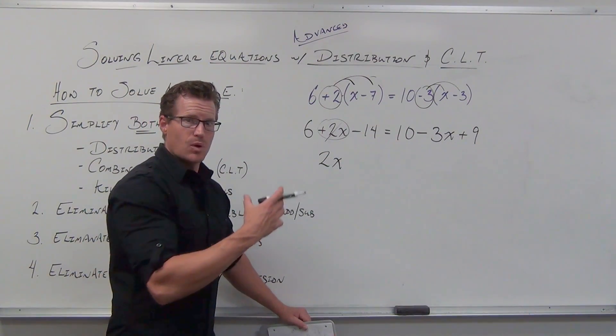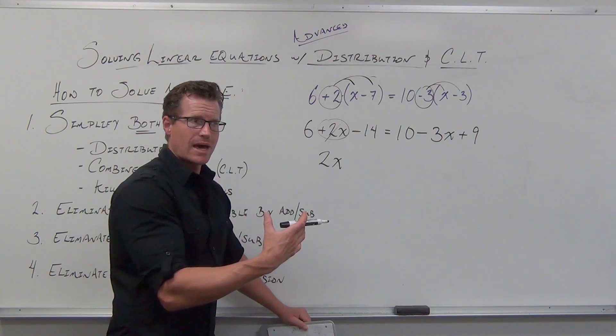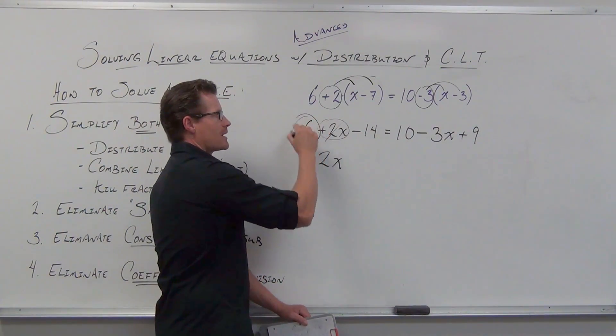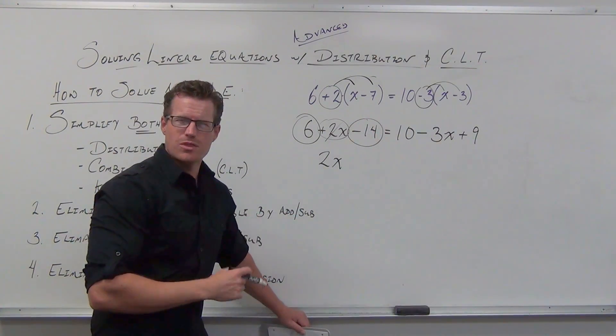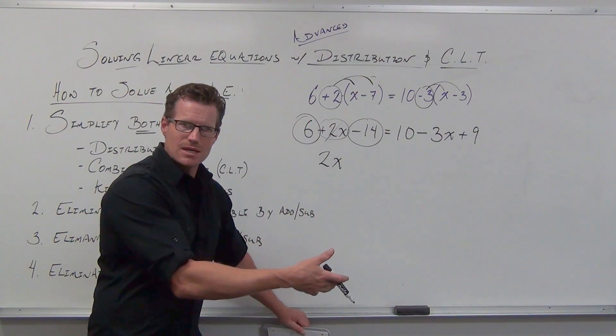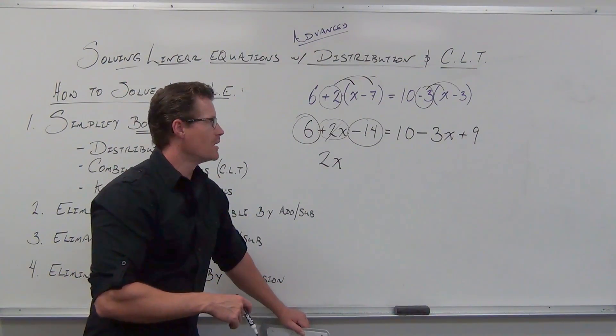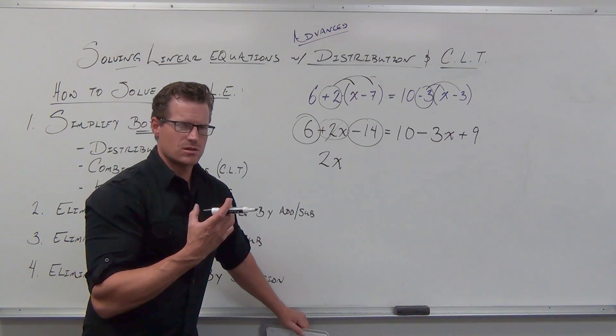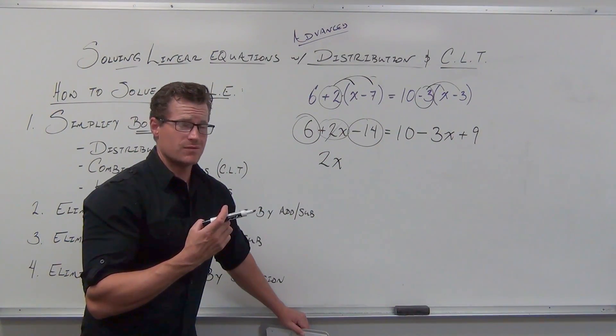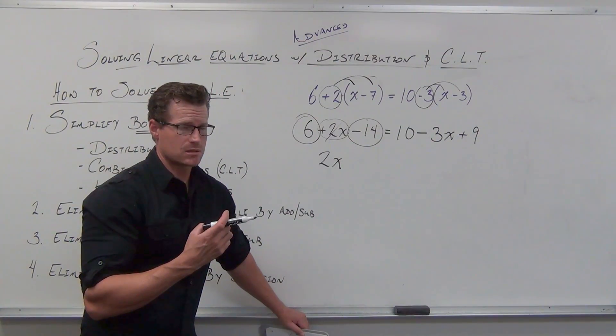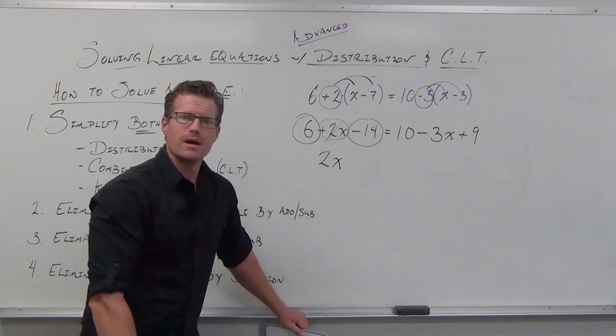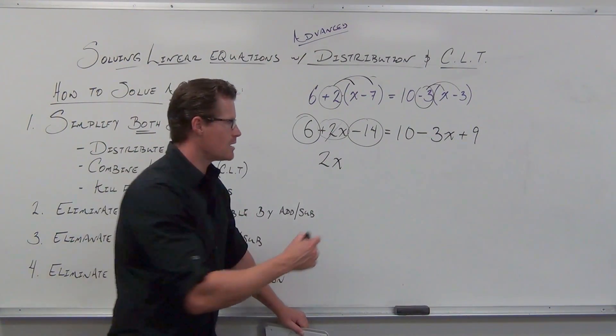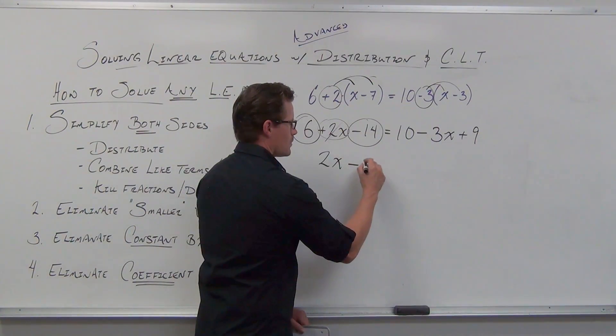After that, we're going to look for our constants. Remember like terms both have to have a variable or both have to not have a variable. That means every pair of constants is automatically like terms. Circle the like terms with their sign. We've got 6, we've got negative 14. Combined like terms is always an addition type of move here. So they have different signs, you subtract, keep the sign of the absolute value bigger number, or use your calculator. You're going to get negative 8. If we say negative, we're going to write down minus.